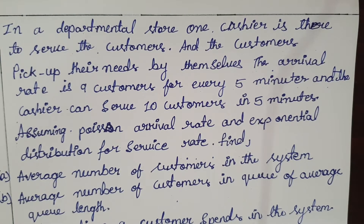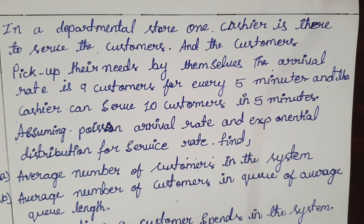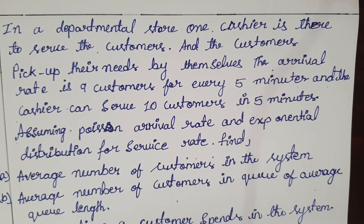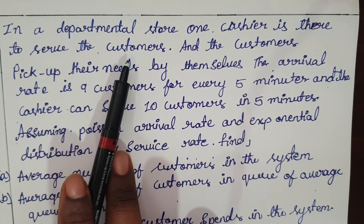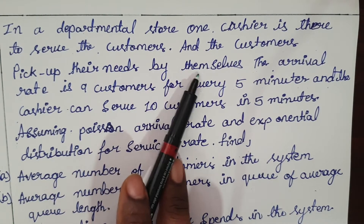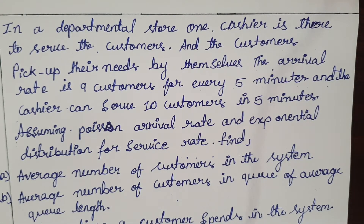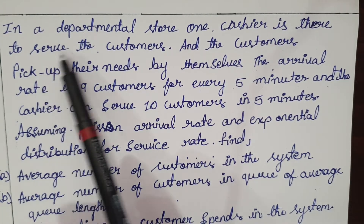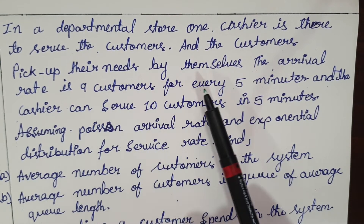In this queuing problem, we will deal with finding two things: lambda and mu. In a department store, one cashier is there to serve customers. Customers pick up their needs by themselves — like in malls or supermarkets, you collect what you want and then go to the bill counter. The arrival rate is 9 customers for every 5 minutes.